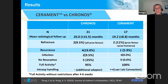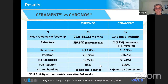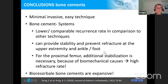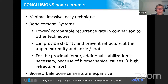Full activity returned after four to six weeks in most patients, but no resorption was seen in the bioresorbable bone cement of the three products — calcium sulfate — during the study period. Bone cement systems showed lower and comparable recurrence rates versus other techniques and can provide stability and prevent re-fracture at the upper extremity and ankle, but at the proximal femur additional stabilization is necessary due to biomechanical causes; otherwise, higher re-fracture rates occur. However, bioresorbable bone cements are very expensive.